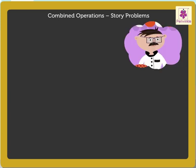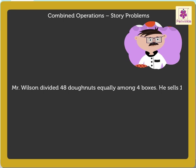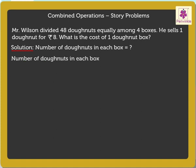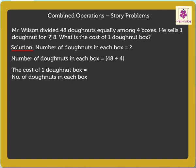Now, let us solve another story problem. Mr. Wilson divided 48 doughnuts equally among 4 boxes. He sells 1 doughnut for 8 rupees. What is the cost of a doughnut box? We will first find out the number of doughnuts in a box. The number of doughnuts in each box is equal to 48 divided by 4. To find the cost of a doughnut box, multiply the number of doughnuts in each box by the cost of one doughnut. So, we get the order of operations as 48 divided by 4 multiplied by 8.